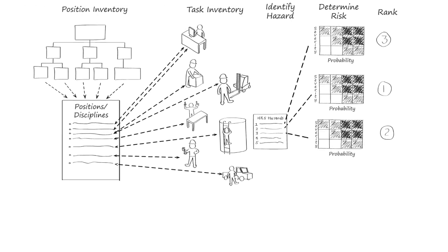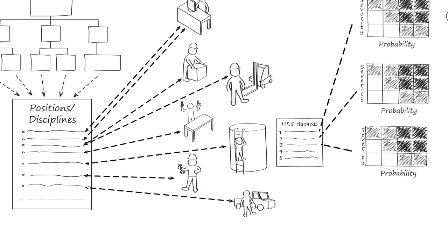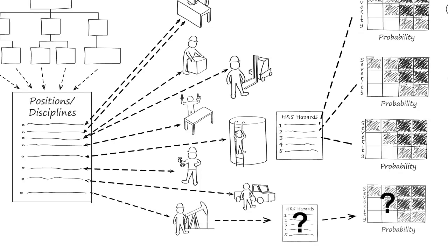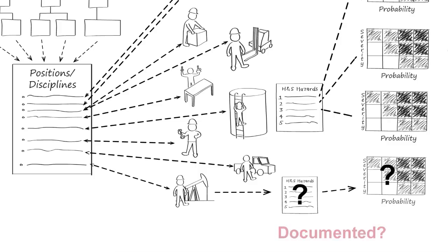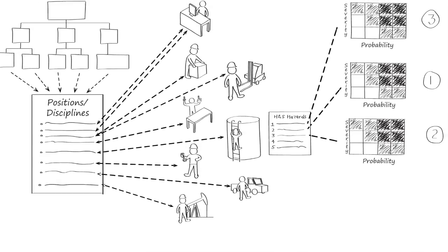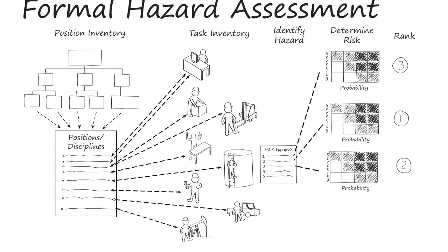Finally, to close the loop on this system, is there a demonstrated and proven process for formal hazard assessment as new or modified operations or conditions arise? If a new position is created, if new tasks are introduced, or if new equipment is used, are the hazards identified and their risks assessed and documented? So that's formal hazard assessment. Remember, different terms might be used, but as an auditor, this is what you're looking for in a company's formal health and safety hazard assessment process.